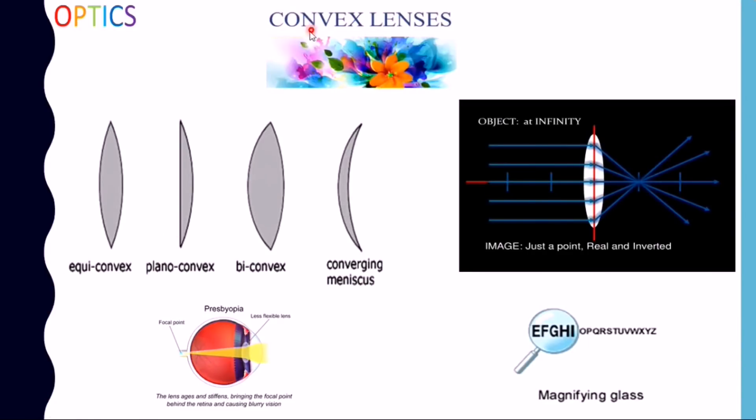Convex lenses or converging lenses are of four types: equiconvex, planoconvex, biconvex, and converging meniscus. We will also study basic ray diagrams and learn some important terms. Moreover, we will study uses of convex lenses as a magnifier and also in the treatment of various refractory errors of eye.